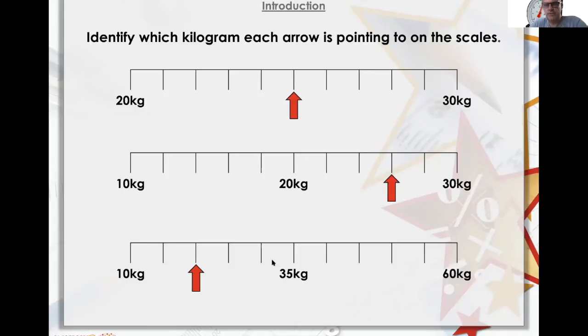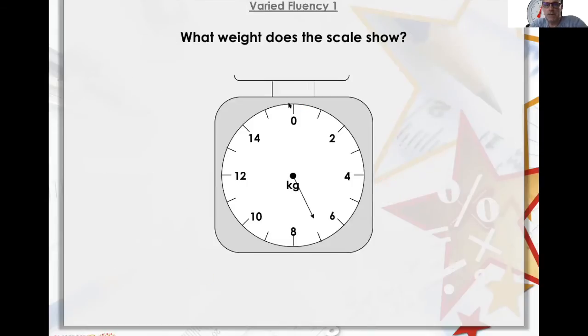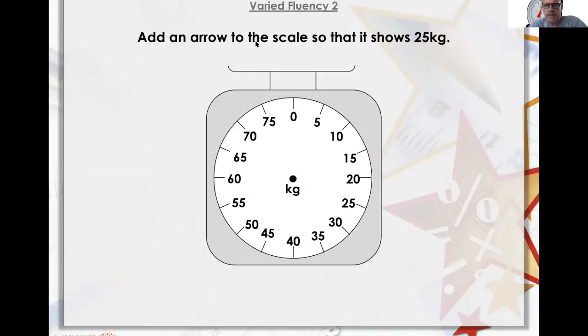What weight does the scale show? Well, it's in kilograms. It's between the middle of six and eight, and the middle is seven. Add an arrow to the scale so it shows 25 kilograms. 5, 10, 15, 20, 25 kilograms. Arrow there!